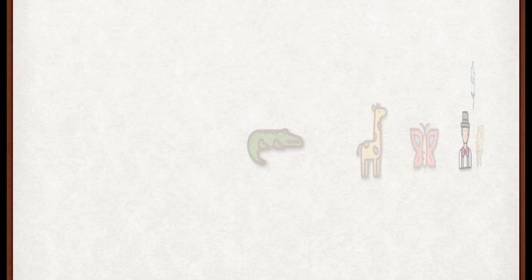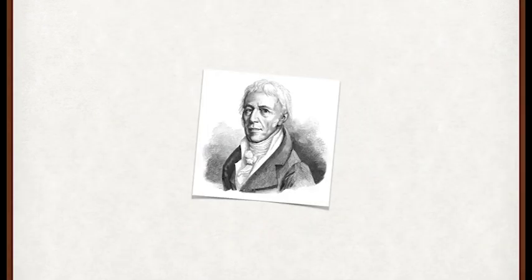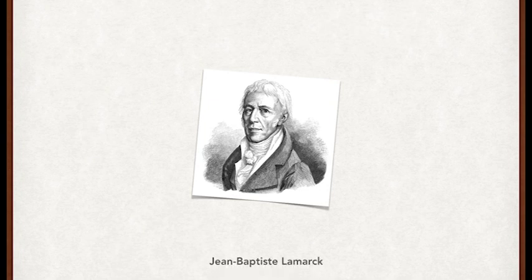For the first time in 1809, someone proposed an evolutionary theory that included the concept of ever-changing species that adapt themselves to their environment. This man was Jean-Baptiste Lamarck.